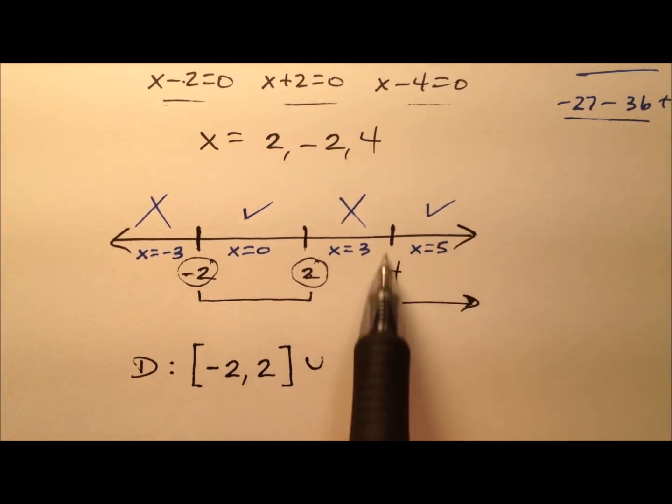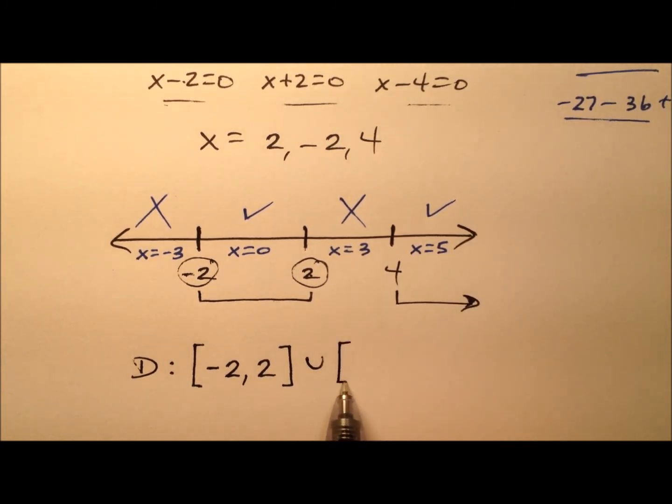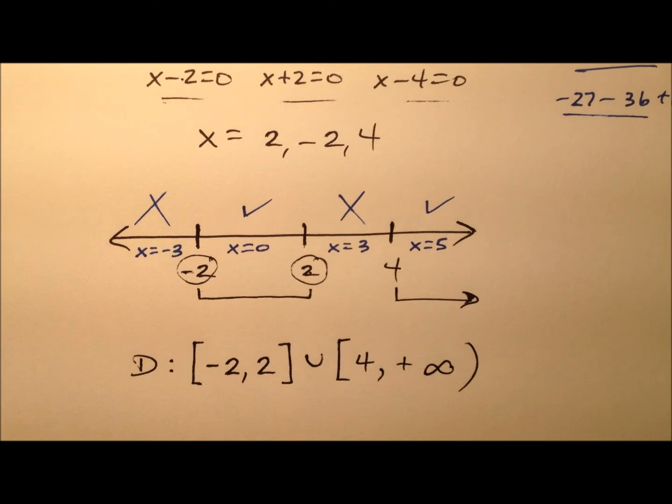And union, because we have another region as well, we'll start up at 4, and I'll use a bracket for the same reason. And we're going to go up to positive infinity, and infinities always get parentheses. So here will be the domain for this function, f of x.